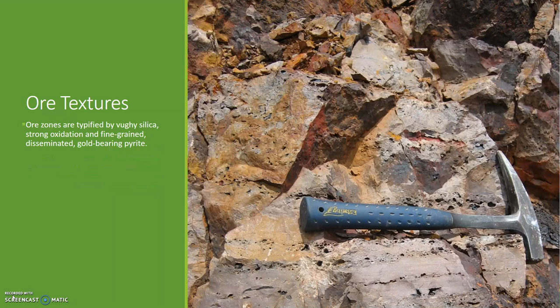All textures in high sulfidation deposits differ significantly from their low sulfidation counterparts. The highly acidic magmatic fluids eat away at the country rock, leaving behind vuggy siliceous alteration zones, and gold — plus or minus copper — is commonly hosted in disseminated pyrite. The red rusty patches in this image, which is from the Nansatsu deposit in Kyushu, Japan, reflect the high sulfide content of this rock.